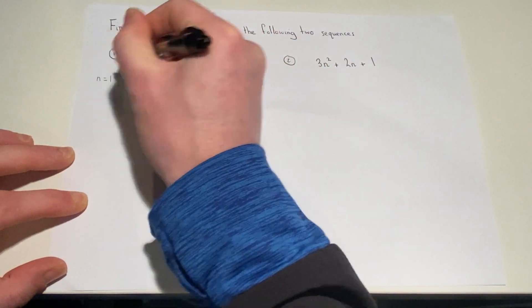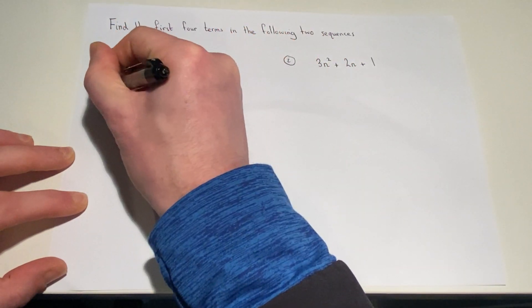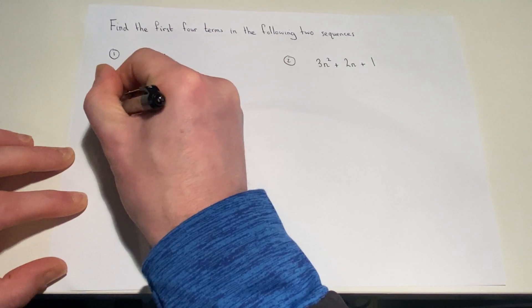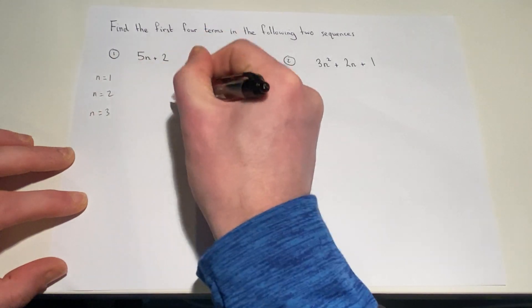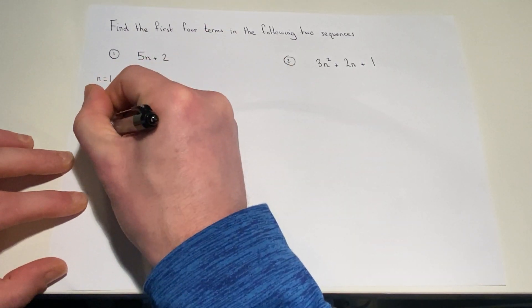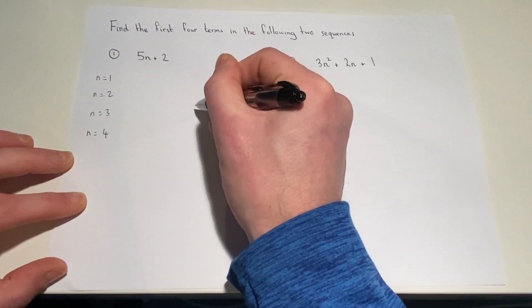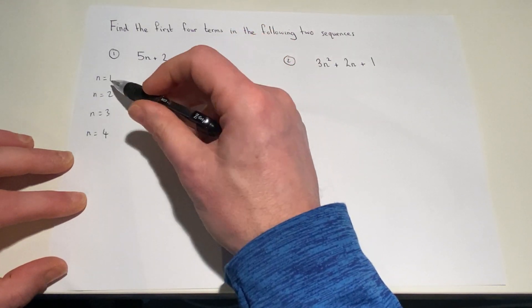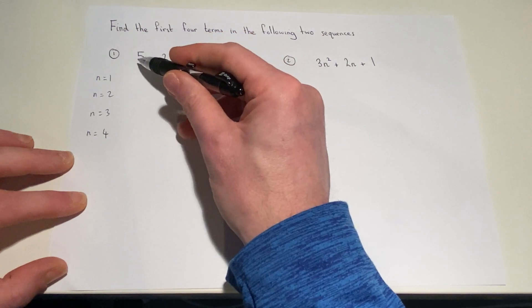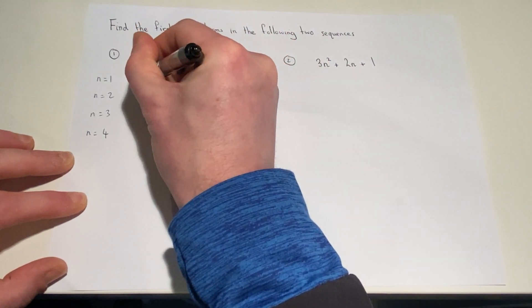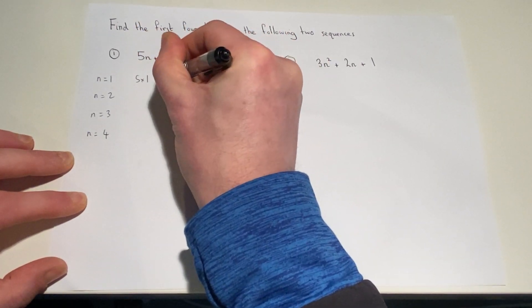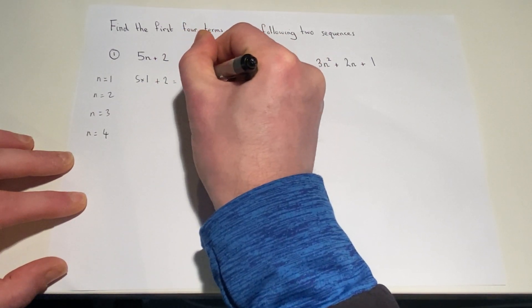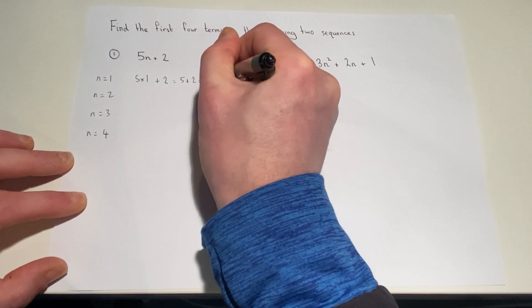The first term is when n equals 1, the second term when n equals 2, the third term when n equals 3, and the fourth term when n equals 4. So the formula is 5n plus 2. When n is 1, we work out 5 times 1 then add 2. Well, 5 times 1 is 5, and 5 plus 2 equals 7.